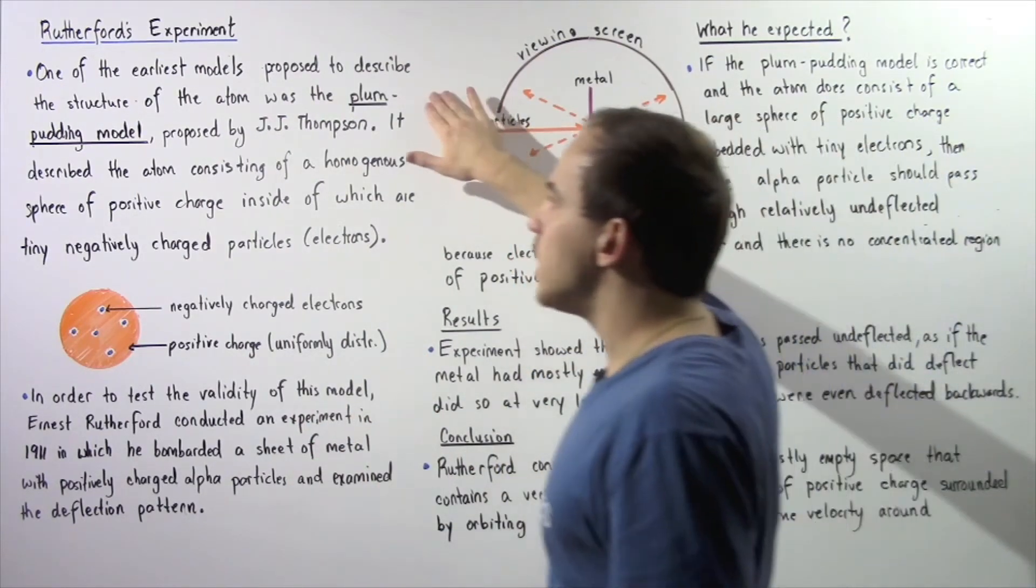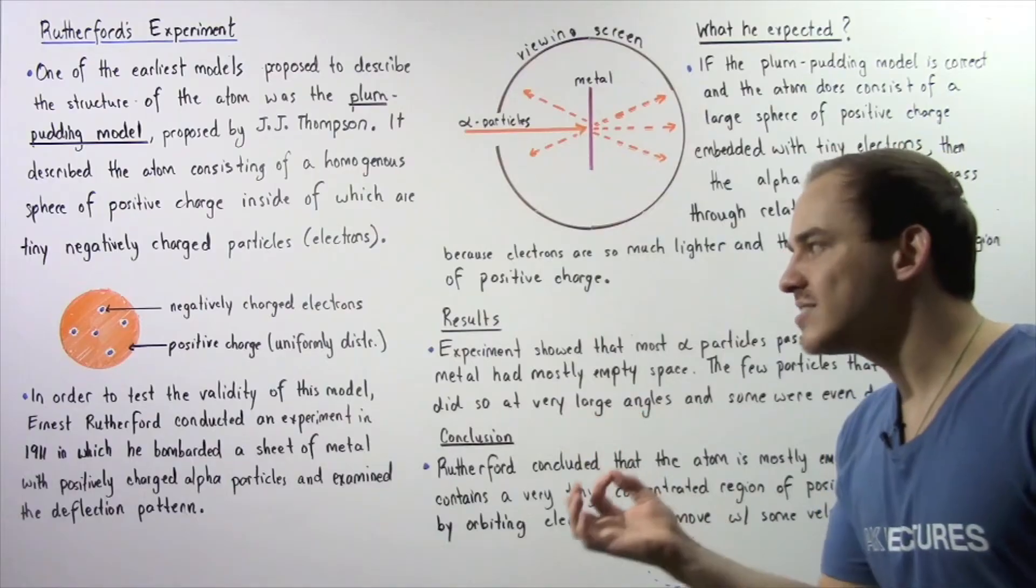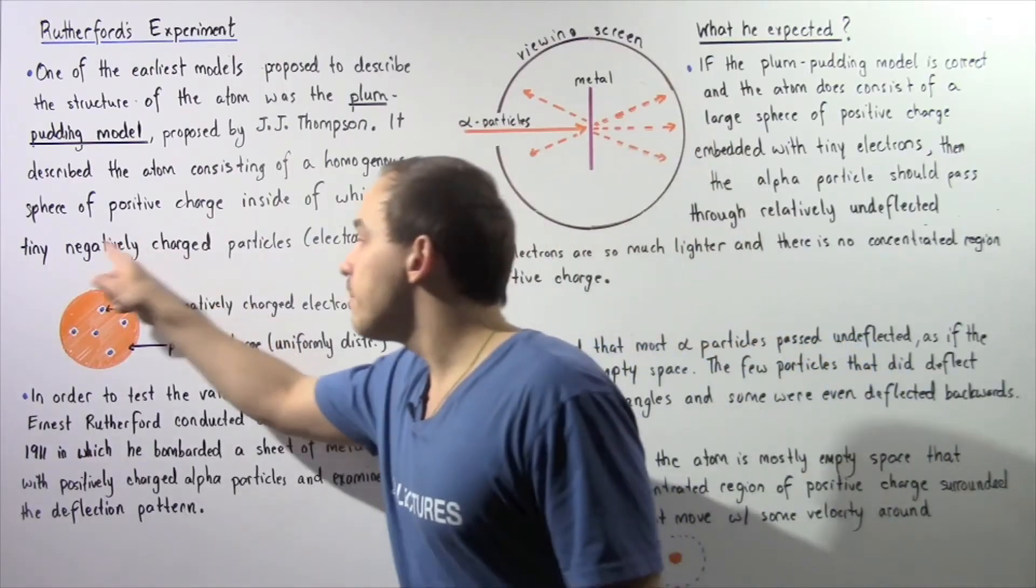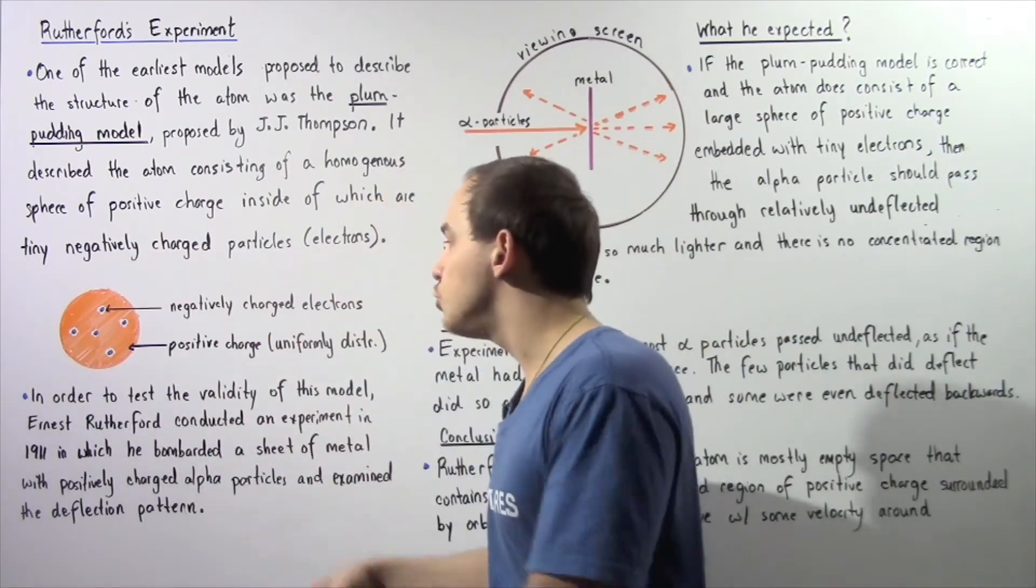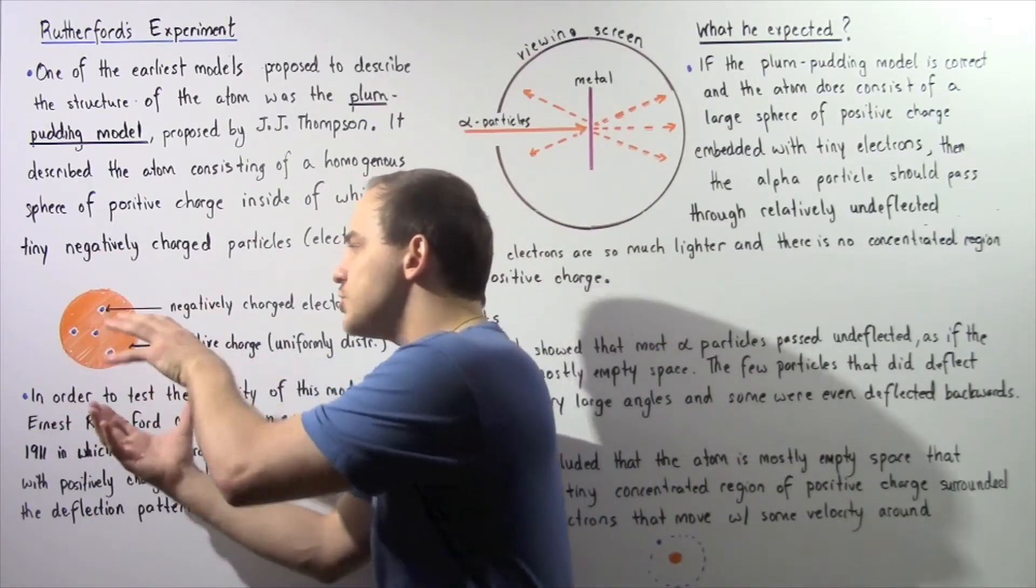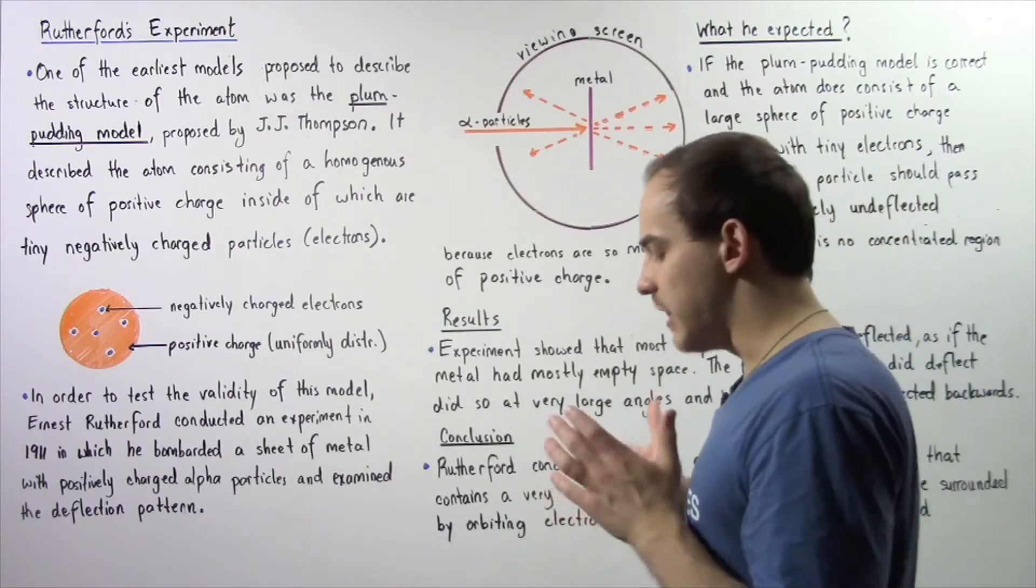The plum pudding model also assumes that there is no concentrated region of positive charge. Because the positive charge is found uniformly distributed in a relatively large region, the alpha particles will essentially pass undeflected.